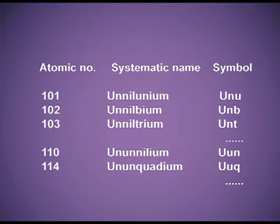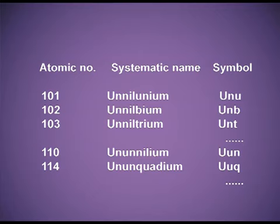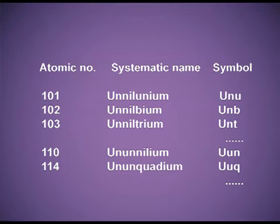Similarly, element with atomic number 103 — its name will be Unniltrium and its symbol is Unt. Taking one more example: atomic number 110 — for 1 it is un, again 1 so again un, for 0 it is nil, with ending 'ium', giving Ununnilium, symbol Uun. For atomic number 114, the name is Ununquadium and the symbol is Uuq.